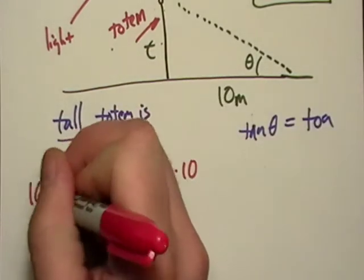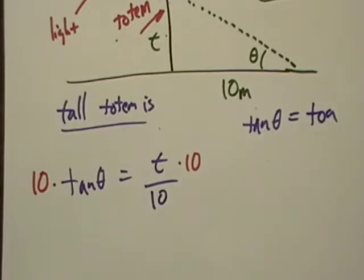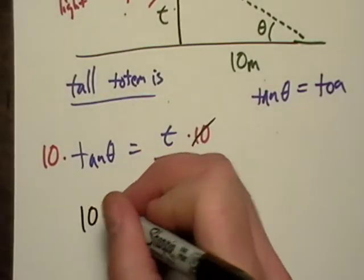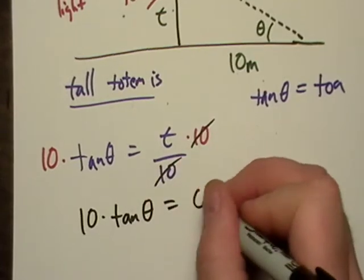and we're going to multiply both sides by 10. It's an equation, just like in algebra. And let's see here. The tens will cancel out now, and we're left with 10 times tangent theta equals T.